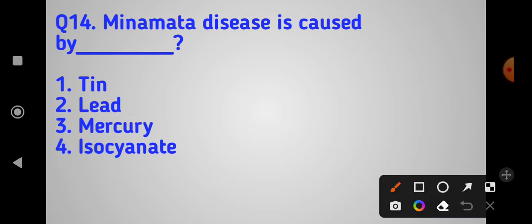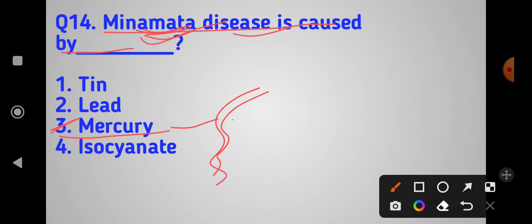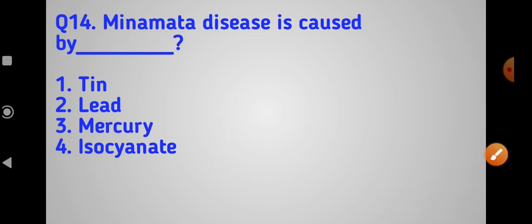Minamata disease is caused by mercury. Option number three is correct - mercury. Mercury poisoning causes Minamata disease.